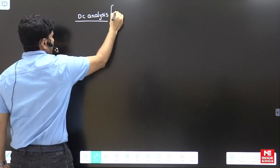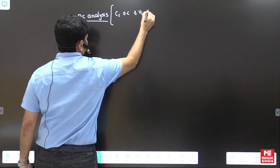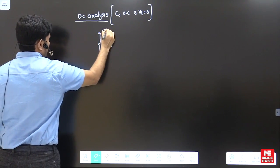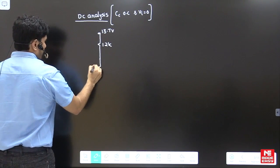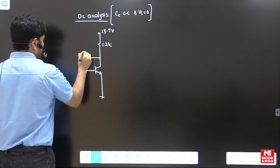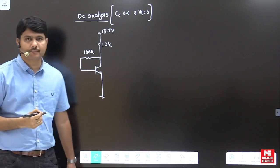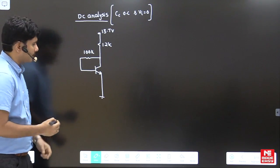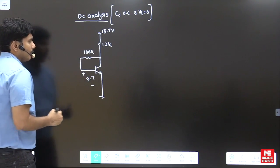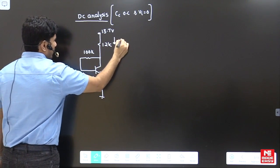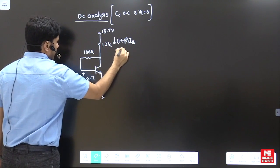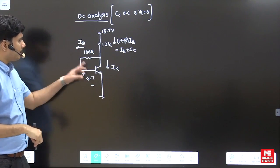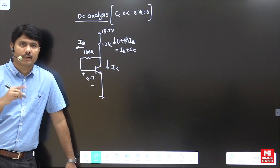In DC analysis, the coupling capacitor should be open circuit and Vi should be zero. The circuit looks like this: 12k resistor, 13.7 volts supply, a transistor, and a 100k feedback. Remove both coupling capacitors for DC analysis. With Vbe = 0.7V, the emitter current can be taken as (1 plus beta) times Ib, which equals Ib plus Ic. From the supply, current divides as Ic on the collector side and Ib on the base side, giving (1 plus beta) times Ib total.